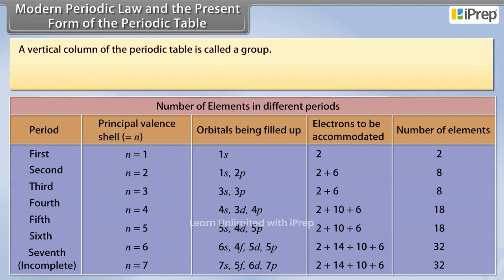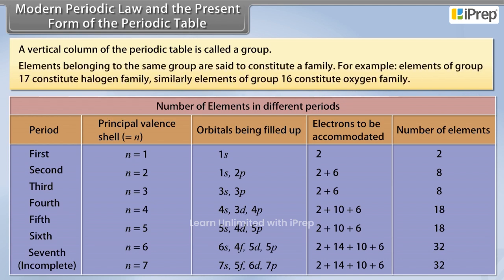A vertical column of the periodic table is called a group. Elements belonging to the same group are said to constitute a family. For example, elements of group 17 constitute halogen family. Similarly, elements of group 16 constitute oxygen family.